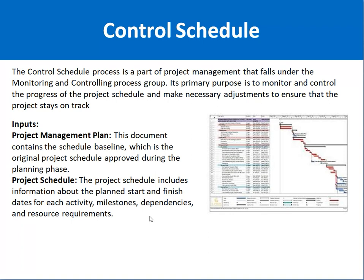The schedule includes the starting and ending date of the overall project, detailed timelines for every milestone and task, assigned resources, dependencies, and costs. In Control Schedule, you monitor and control the schedule for any deviations from the planned schedule. If the project is getting off track, you raise a red flag and take corrective action to get the project back on track.